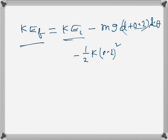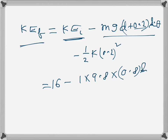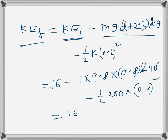The initial kinetic energy provides for the increase in gravitational potential energy due to the height increase, and for the spring's elastic potential energy. Substituting: 16 minus 1×9.8×0.8×sin40° minus ½×200×(0.2)². This gives approximately 16 minus 5 minus 4, which equals 7 joules. That's the answer to Part A.